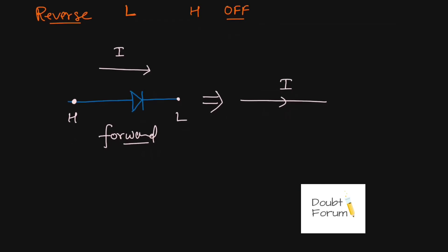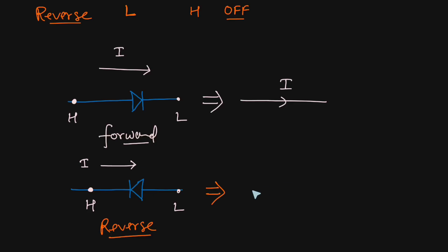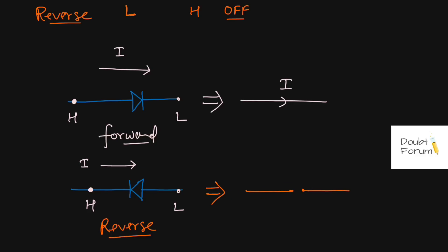Now consider a different scenario. Here the diode is connected in the opposite orientation, and suppose the direction of current is still the same. From the direction of current, we can conclude that this point is at higher potential and this point is at lower potential. As we can see, this is the negative of the diode, so the negative is at higher potential while the positive is at lower potential. This type of biasing is called reverse biasing. When the diode is in reverse biasing, it behaves like an open circuit. So no current will pass through this diode, and the value of current would come out to be 0.